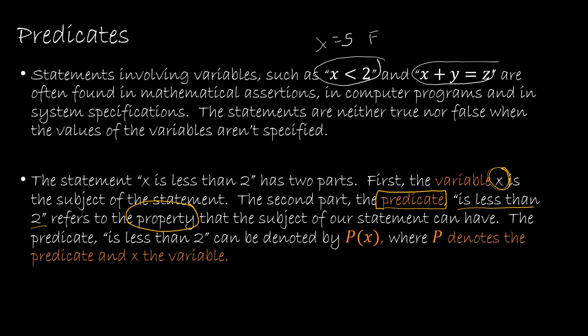So we have the predicate which we denote with P and the variable which we denote with x and notice the way that we're going to write this. This should look very familiar to you. This looks like a function.